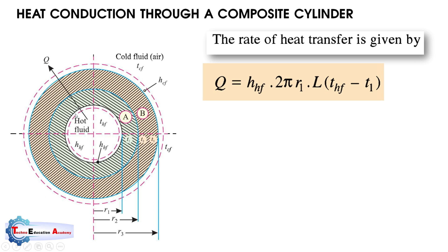Inside the pipe, according to Newton's law of cooling: Q = h·A·ΔT. We have already discussed Newton's law of cooling for convection in our previous lectures. So here, h is H_hf (heat transfer coefficient for hot fluid), the area of the cylinder is 2πr₁L where r₁ is the inner radius and L is the length. The temperature difference is T_hf minus T1, where T1 is the inner surface temperature of the first layer.